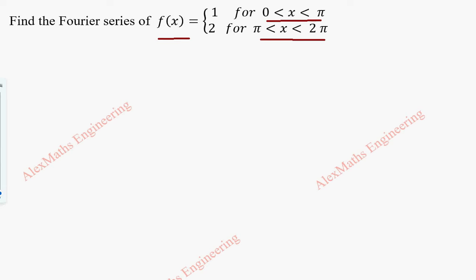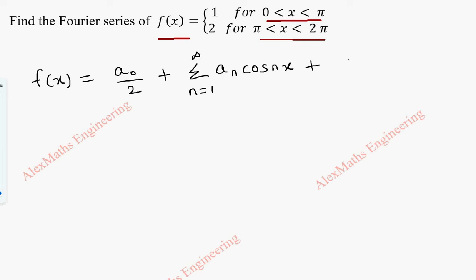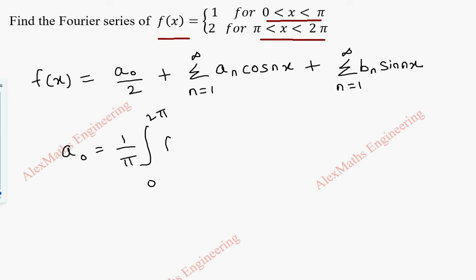As a first step, we write the formula for the Fourier series: f(x) = a₀/2 plus the sum from n=1 to infinity of aₙ cos(nx), plus the sum from n=1 to infinity of bₙ sin(nx).